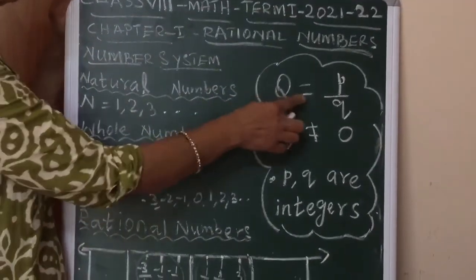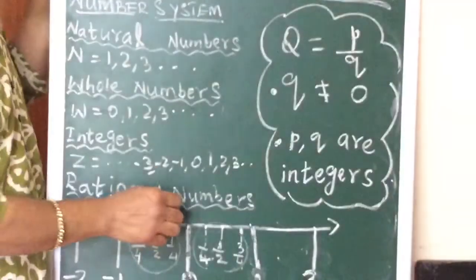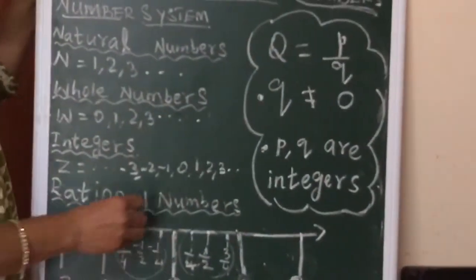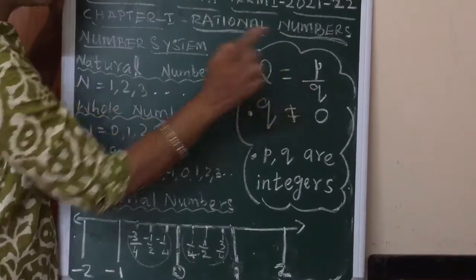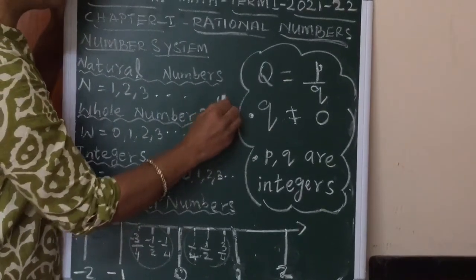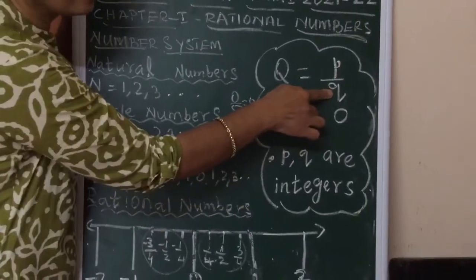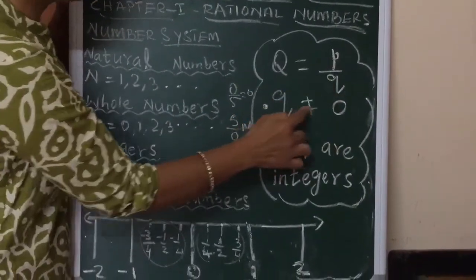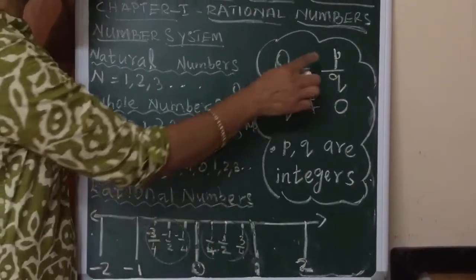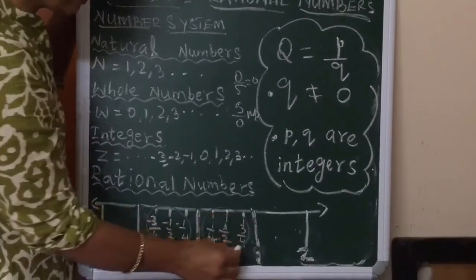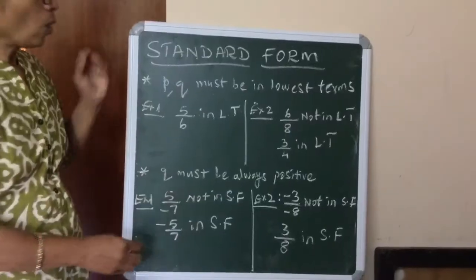Rational numbers are denoted by the capital letter Q. A rational number is of the form p/q, where p is the numerator and q is the denominator. Two important conditions: q (the denominator) is not equal to zero, because division by zero is not possible. Also, p and q are integers, meaning they can be positive or negative. This is the key difference from fractions, where numerator and denominator are always positive.